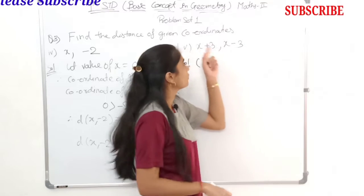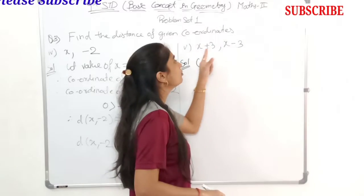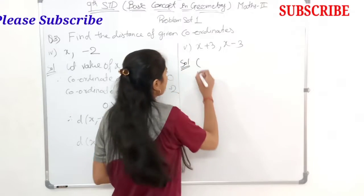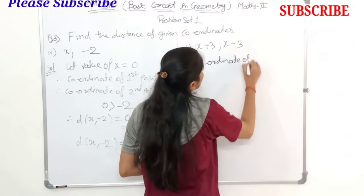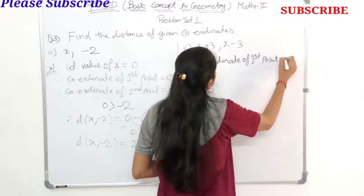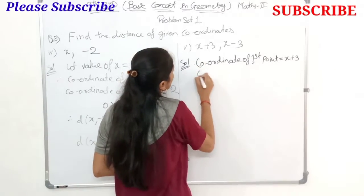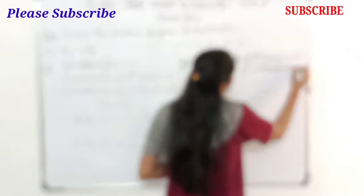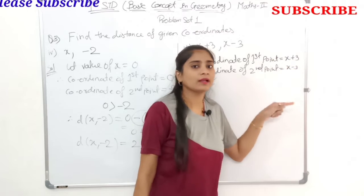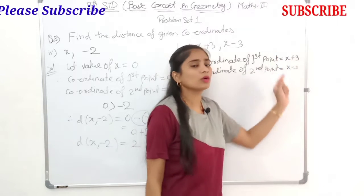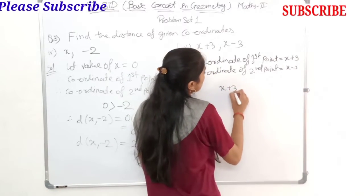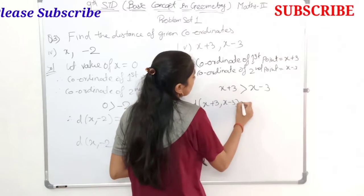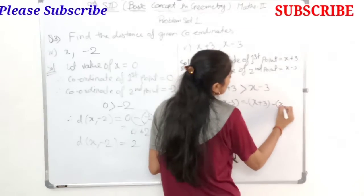The next question is the 5th: x plus 3 and x minus 3. Here there is no proper numerical value for x. We solve it as before. Coordinate of first point is x plus 3, and coordinate of second point is x minus 3. We know the greater number comes first; since x plus 3 is greater than x minus 3, distance between x plus 3 and x minus 3 will be x plus 3 minus x minus 3.